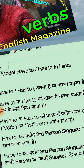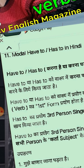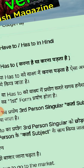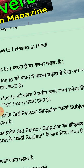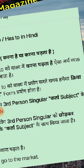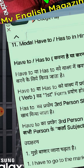Have to, has to. First of all I give the meaning. I want to explain the meaning. Have to, has to — Hindi में करना है या करना पड़ता है. Have to, has to को sentence में करना पड़ता है, ऐसे meaning के लिए use किया जाता है.